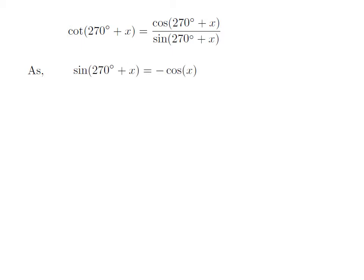As we know, the trigonometry identity sine of 270 degree plus x is equal to minus cosine of x. The proof of this trigonometry identity has been explained in the video appearing in the upper right corner. The URL of the video has been mentioned in the description section as well.